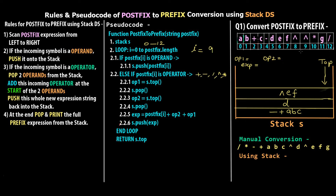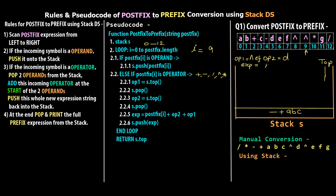i becomes 9; postfix[9] is another '^' operator, so step 2.2 executes again. op1 = s.top() = '^ef'; pop it. op2 = s.top() = 'd'; pop 'd'. exp = '^' + 'd' + '^ef' = '^d^ef'. We push '^d^ef' onto the stack as the new top.